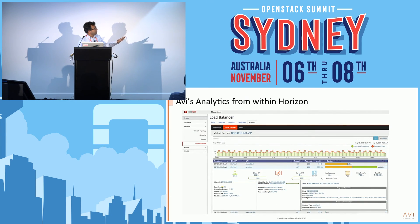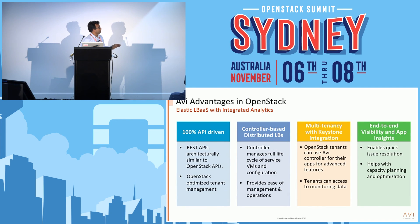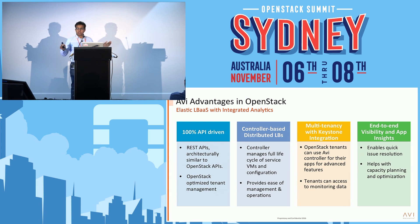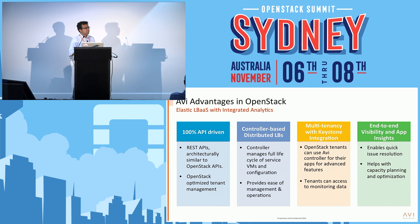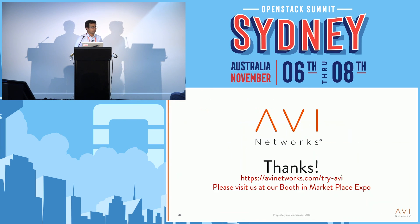We are fully integrated into Horizon, so users don't need a separate UI — just log into Horizon and in the load balancers panel you'll see Avi, along with deep analytics and visibility into application performance. To summarize, Avi has several advantages in OpenStack: it's an elastic load balancer with integrated analytics, 100% API driven, a distributed system that scales well — we've tested up to four terabytes per second and 12 million SSL transactions per second. Fully integrated with Keystone for multi-tenancy, providing deep visibility and app insights — an enterprise-grade ADC analytics engine for OpenStack.